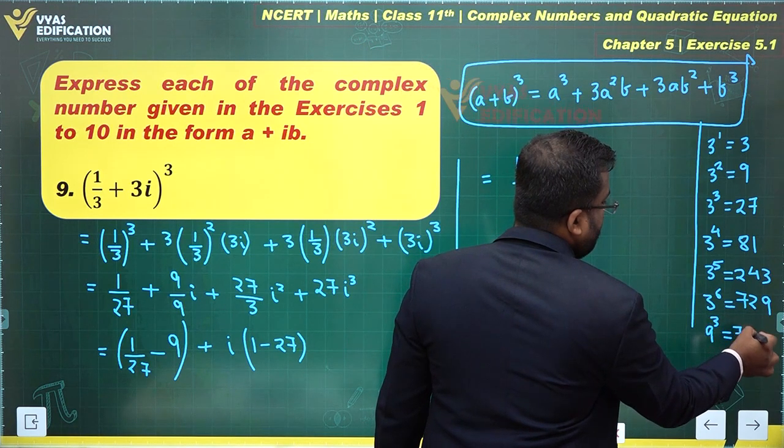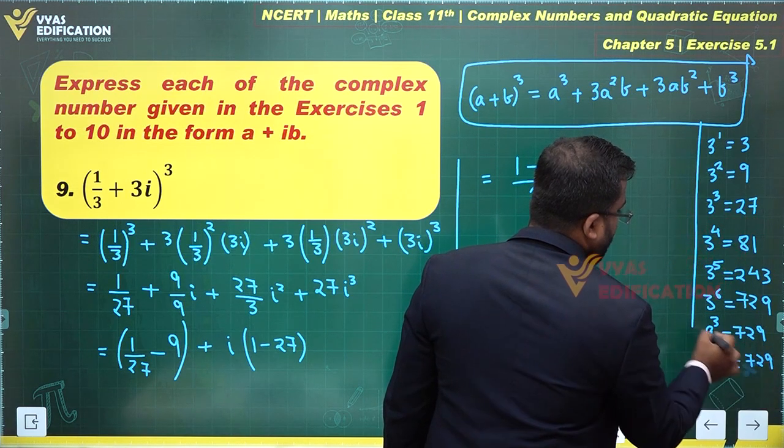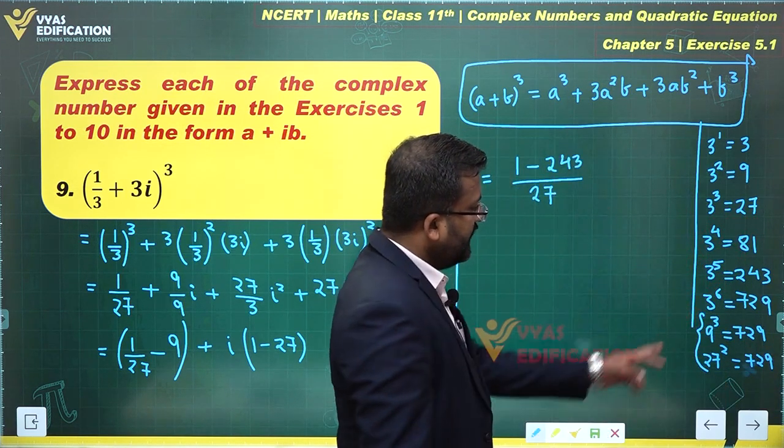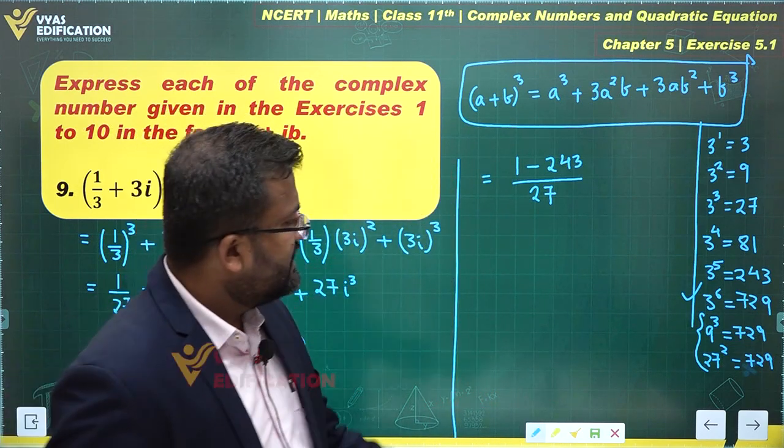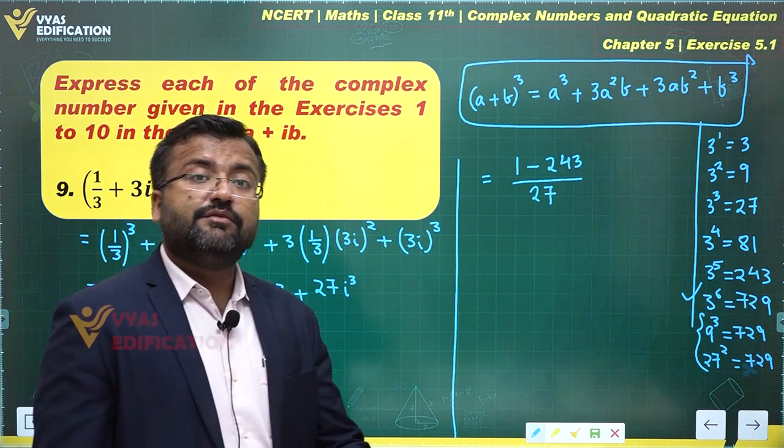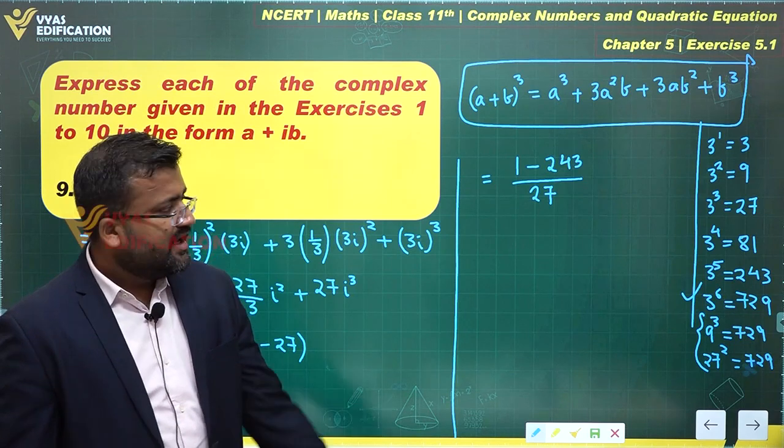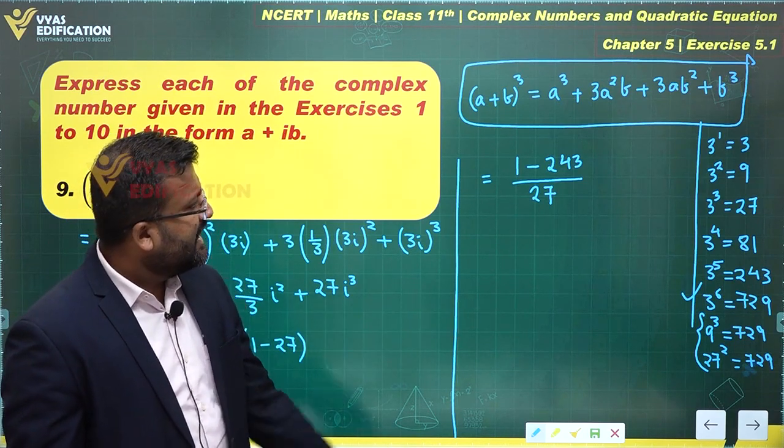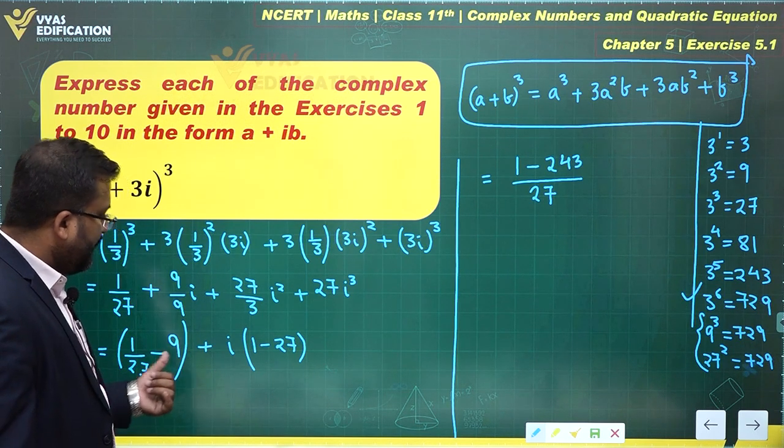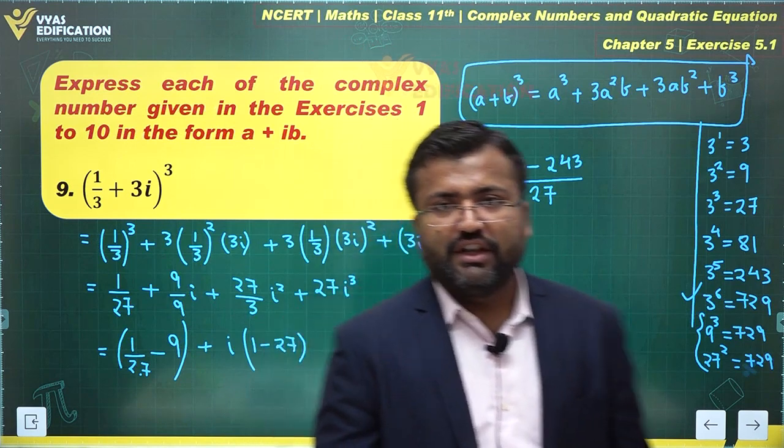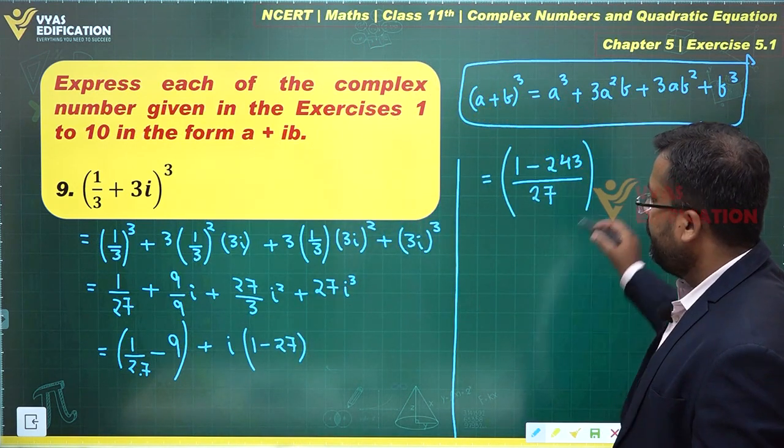This is a special thing about 729. 729 is 9³ and 27² is also 729. Both of these are obtained with 3⁶. Here what did we require? We require 3³ × 3², which is actually 3⁵. 3⁵ is 243, simply 243. So that's the real part plus i times -26.